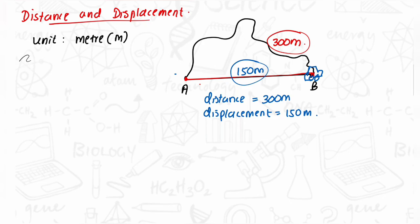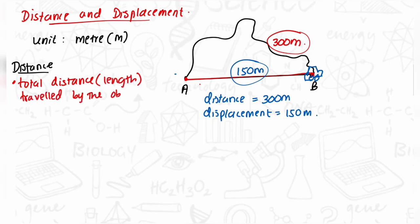Now if we write the definition for distance: Distance is the total distance or length traveled by an object in order to move from one position to another.